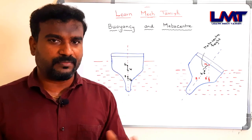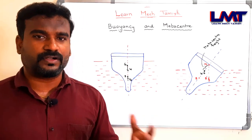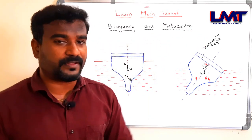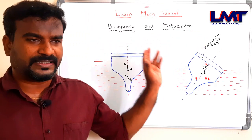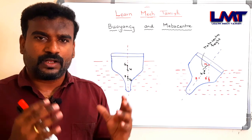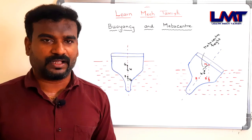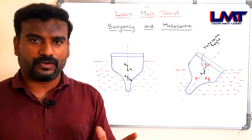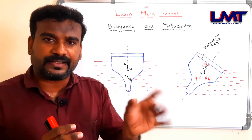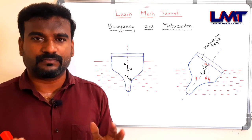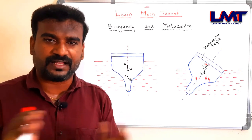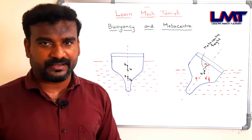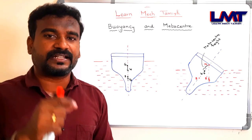Now let's talk about the metacenter. The metacenter deals with the stability of equilibrium. If you have a floating body in water and you tilt it to one side, the stability of the equilibrium depends on the height of the metacenter.